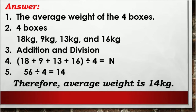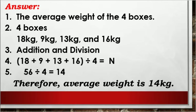Teacher, bakit po addition and division ang gagamitin na operation? Dahil average weight ng 4 boxes ang hinahanap sa problem, kinakailangan nating i-divide sa 4 ang lahat ng mga kg na ating pinagsama. Kaya para maisulat ang number sentence, kinakailangan muna nating pagsamahin: 18 + 9 + 13 + 16, bago natin ito i-divide sa 4, equals n. Ang pinagsamang weight ng 4 boxes ay 56 kg, divided by 4, equals 14. Therefore, the average weight of the boxes is 14 kg.